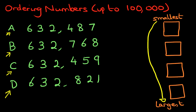So how are we going to do this? We're going to begin on the left hand side. Now I'm assuming you've already counted the digits — all of them have six digits.